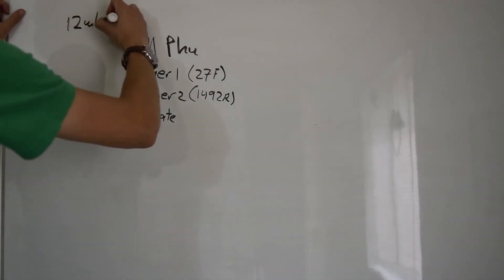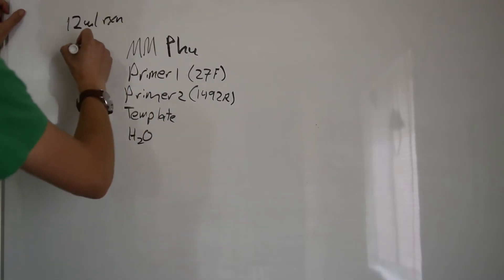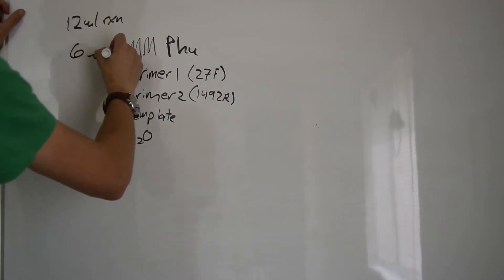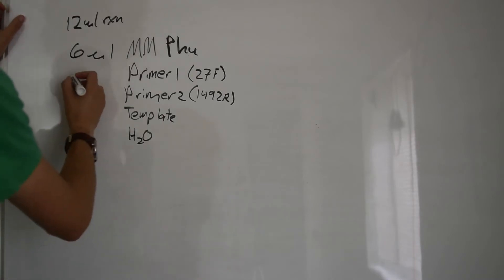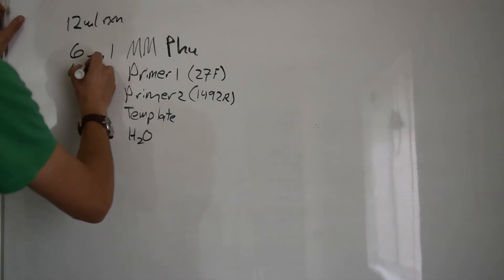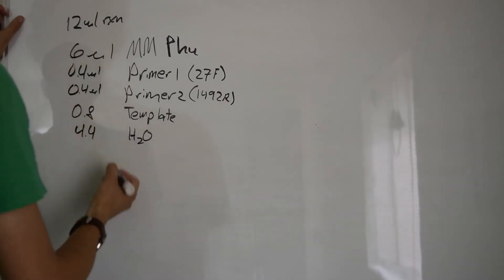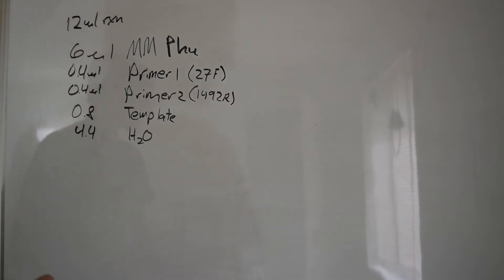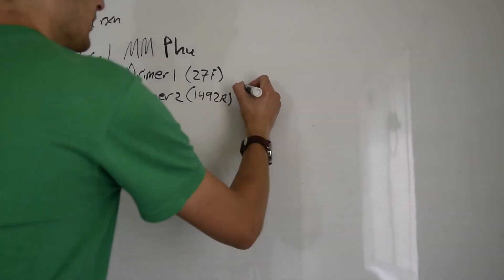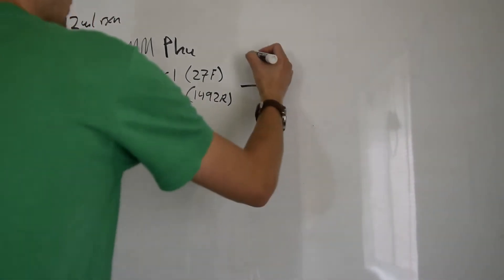So if we're doing a 12 microliter reaction, which is pretty small, you generally want to do larger, but this works. We'll do exactly half of it is the master mix, because it's at 2x concentration. We can do 0.4 microliters of each primer. The template works well to do 0.8 microliters. And finally, to fill it up to 12, we'll do 4.4 microliters of water. The amount of primers and template, and thus also the water, can be flexible.